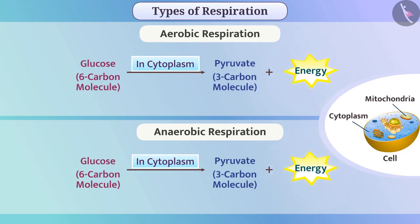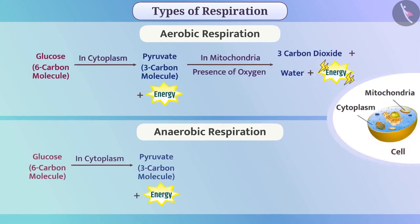Energy can be produced from the pyruvate molecules, but the method of production may vary. For example, in the cell organelle called mitochondria, in the presence of oxygen, a molecule of pyruvate is broken down into 3 molecules of carbon dioxide and water, and thus energy is produced. In this process, oxygen is present, which is why this is aerobic respiration.